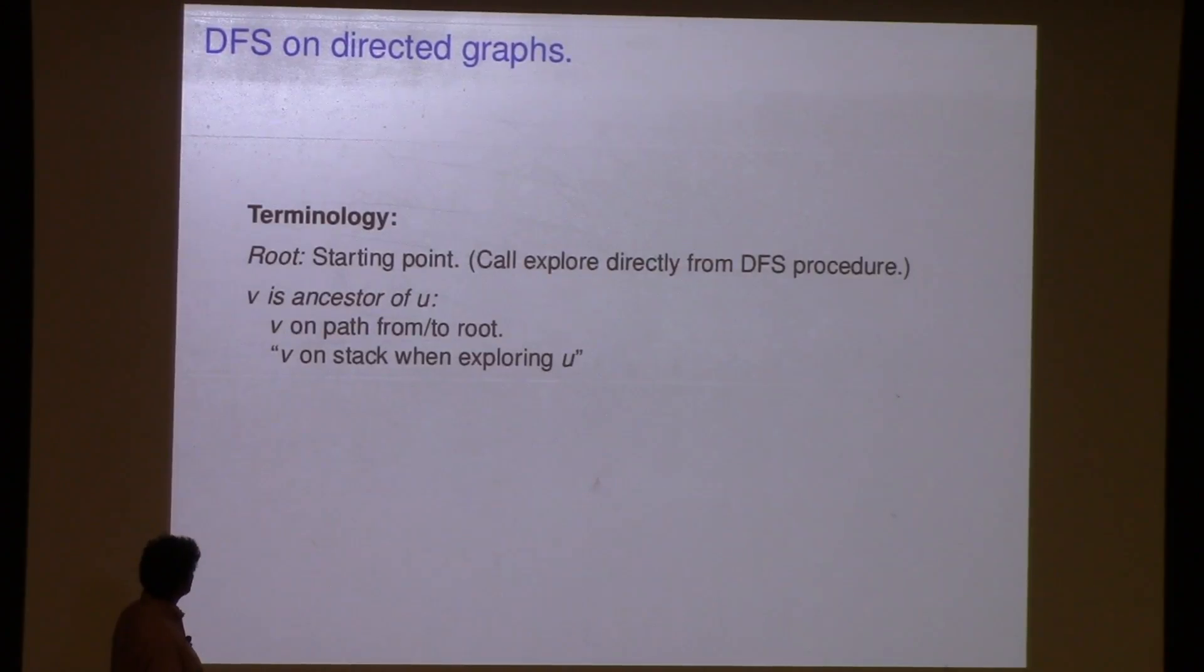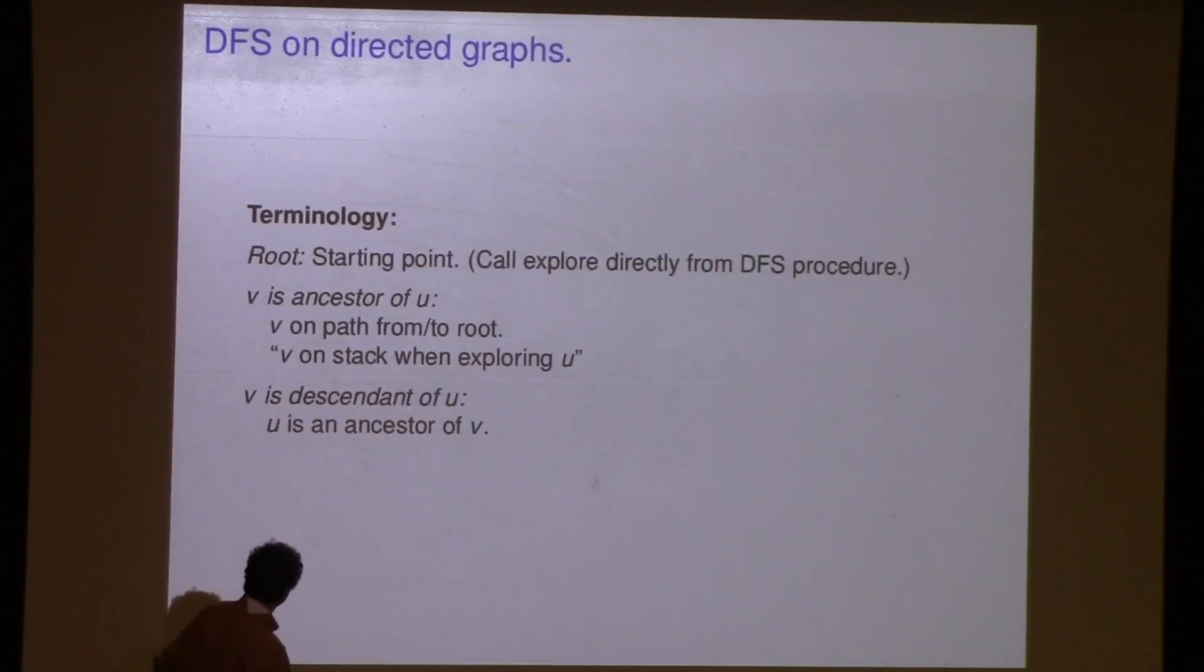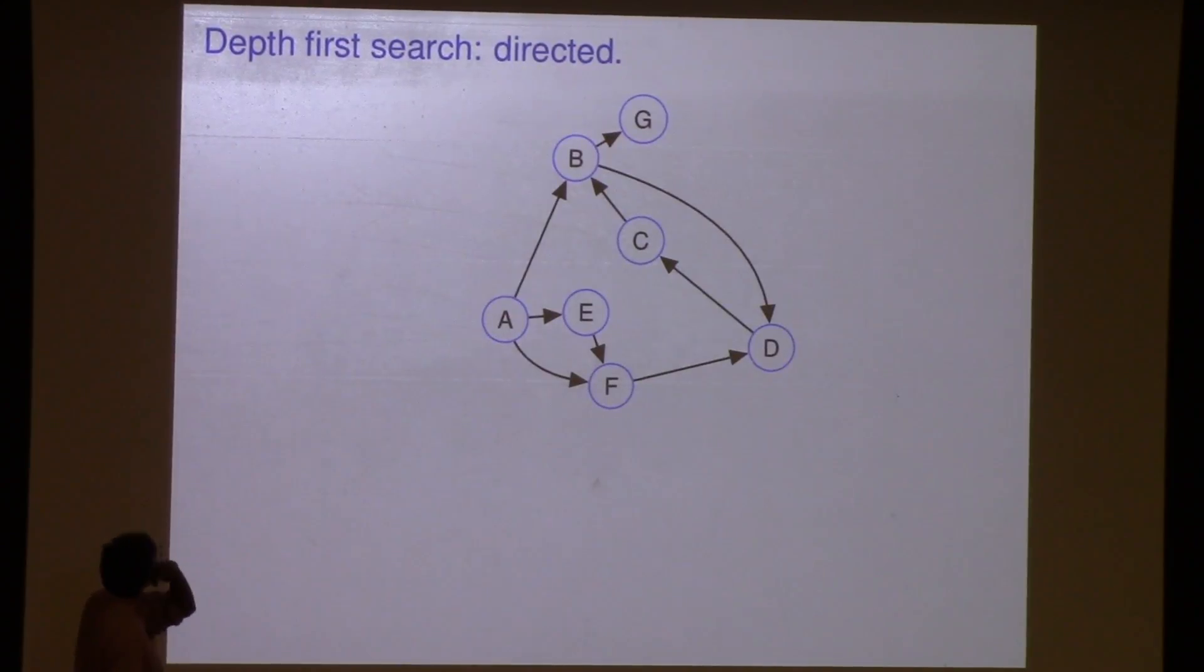V is an ancestor of W. V is on the path from or to a root. Depending on which order you're doing it. V is on the stack when exploring you, if you want to think about the stack. So when we think of depth research, we think about the action of a stack. We're pushing stuff on, we're taking stuff off. We're thinking about recursion that way. That's why it's not really recursive. Recursive has this magic thing, but here we're actually looking at the stack. The recursive is just a convenient way to express it. V is a descendant of U, that's obvious. It's the opposite of ancestor.